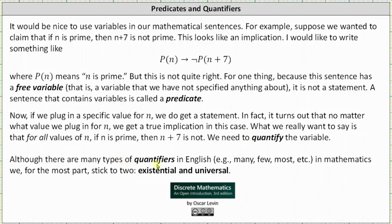Although there are many types of quantifiers in English, for example, many, few, most, and several others, in mathematics, for the most part, we stick to two: existential and universal.